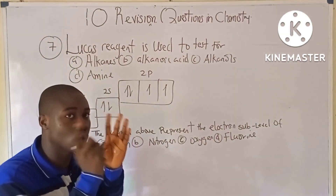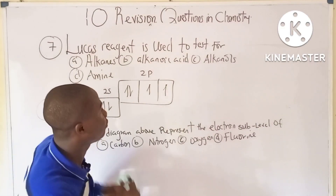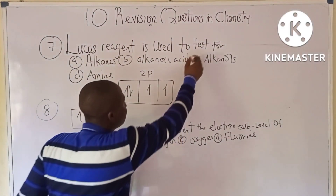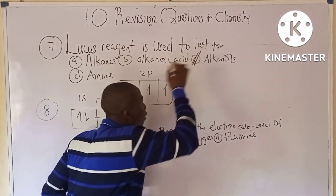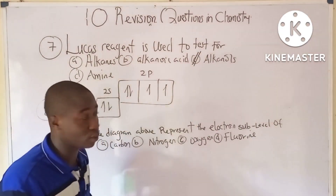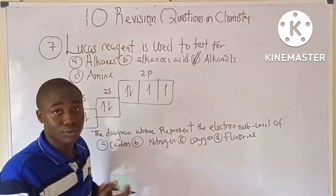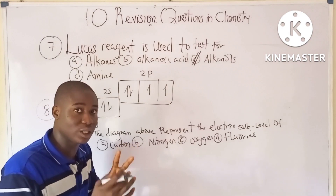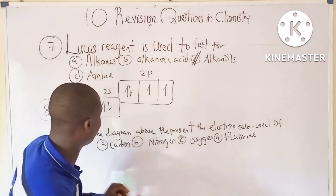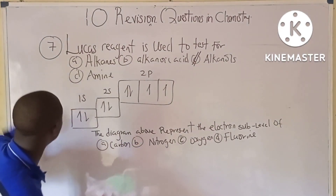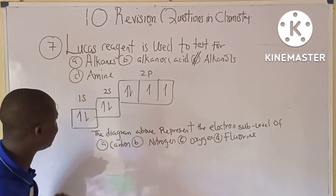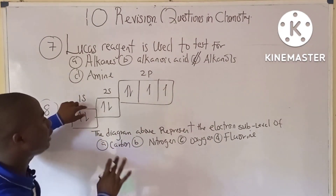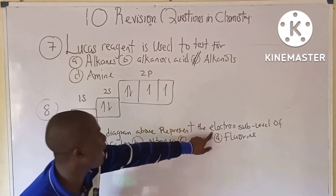Question seven: Lucas reagent is used to test for alkanols.